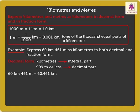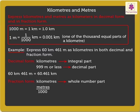Further, let us express it as a fraction. Here, KILOMETERS form the whole number part and METERS are written in the numerator with 1000 in the denominator. So, 60 KILOMETERS is expressed as 60 and 461 upon 1000 KILOMETERS as a fraction.